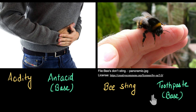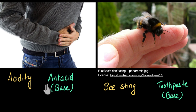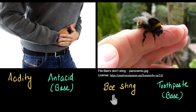Something common is happening here. When you have acidity, there is excess acid being built up in your stomach, and when you take an antacid or a base, the acid and the base cancel each other's effect out, and that's why you get relief. Similarly, when a bee stings you, a bee sting has some acid — it injects an acid into your body, which hurts, which burns.